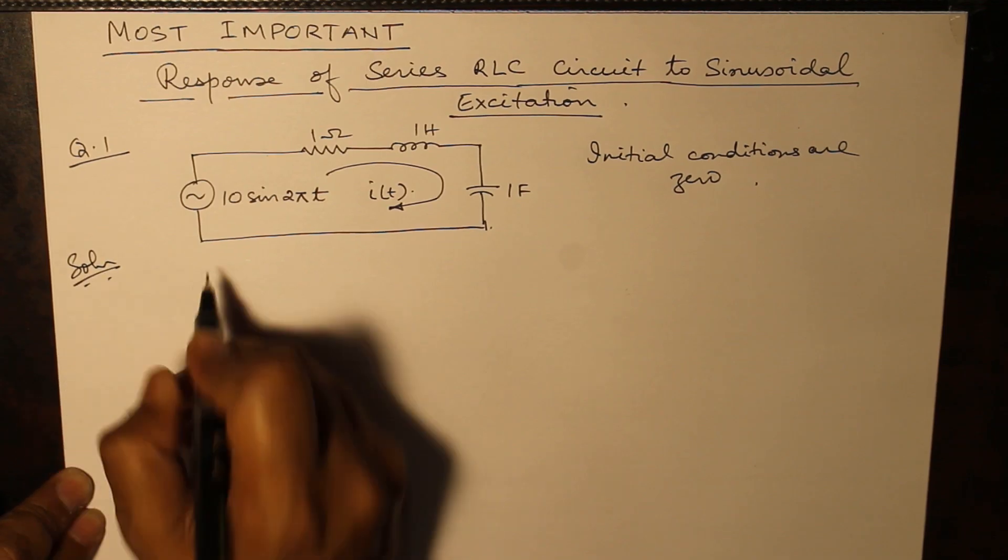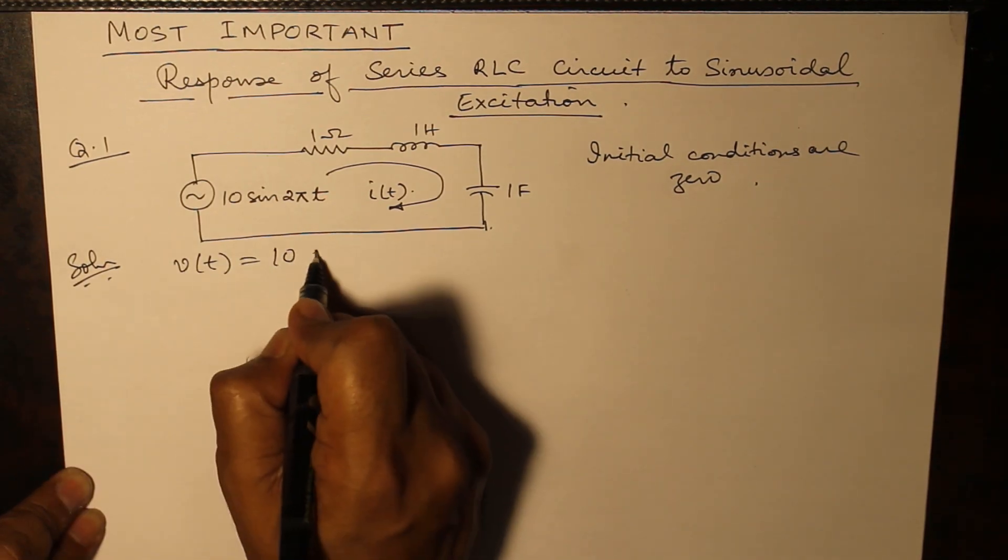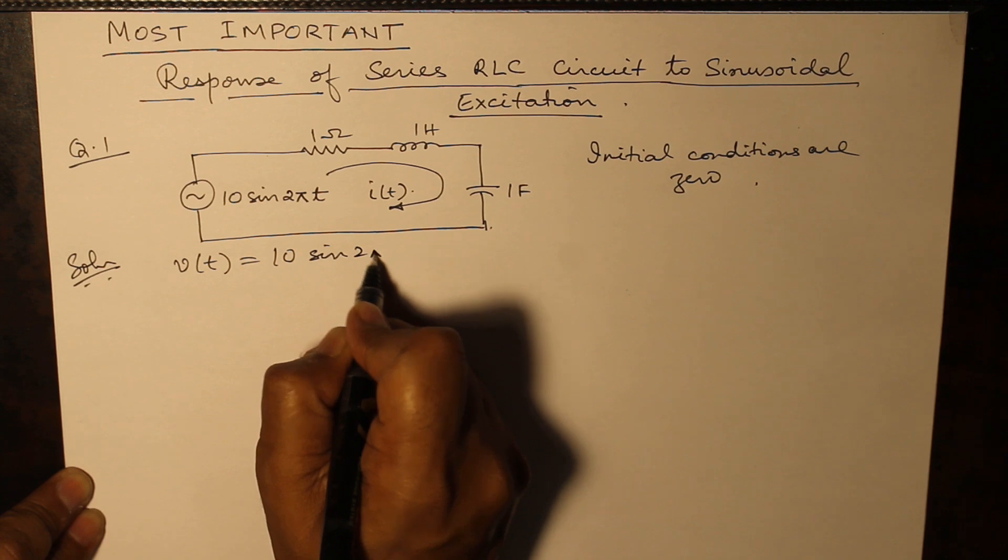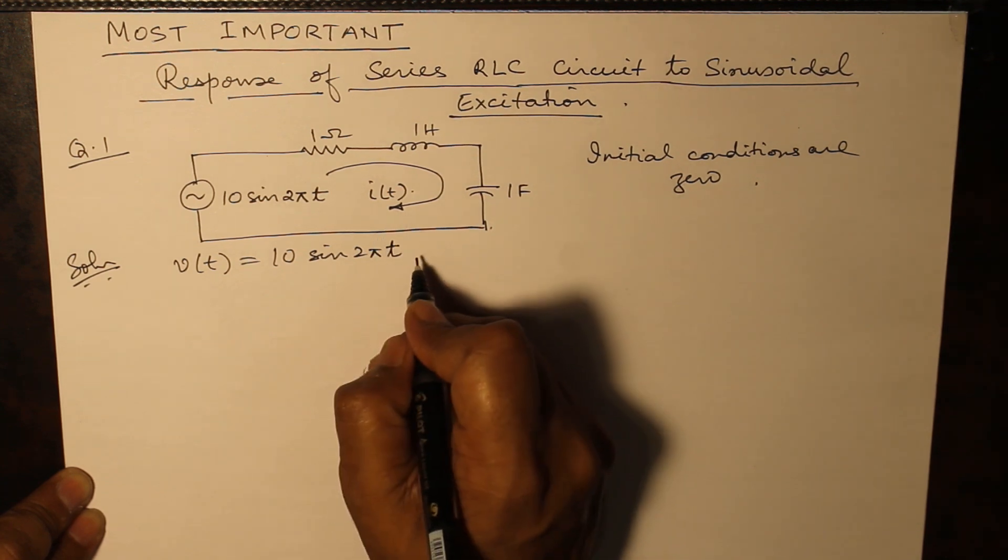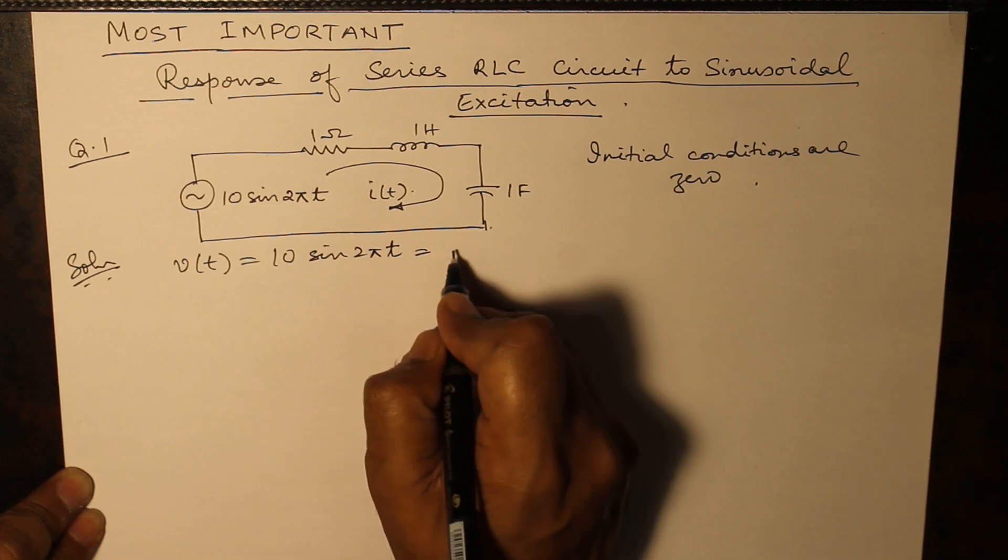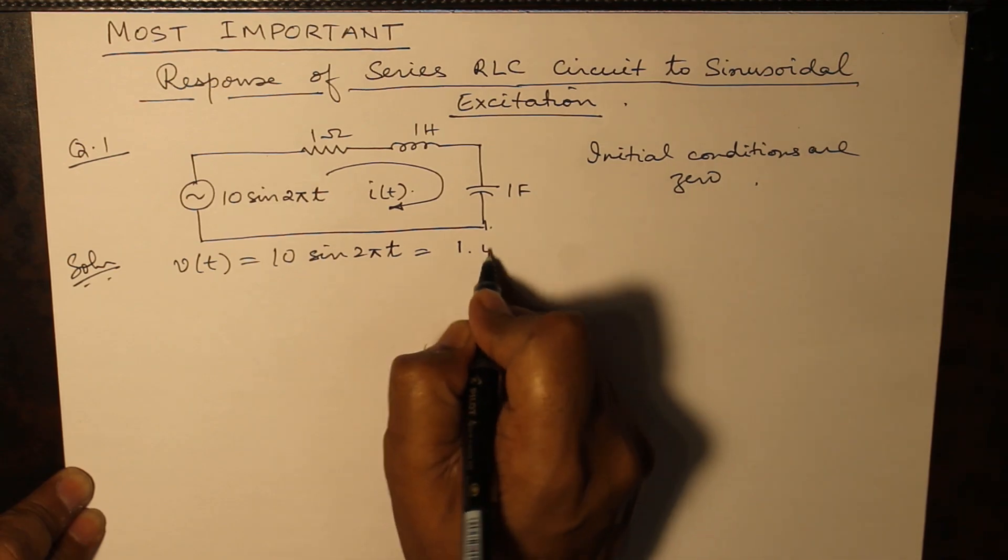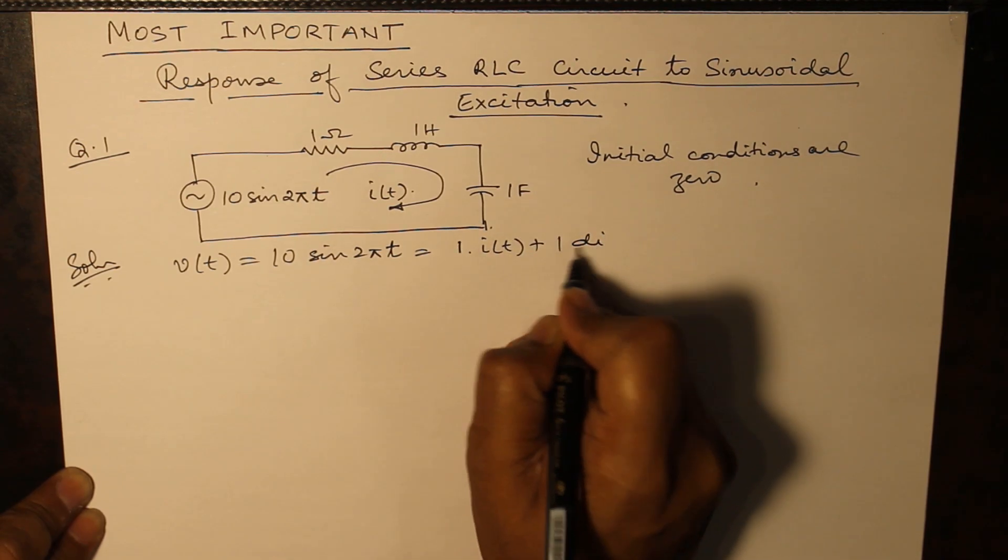Writing the KVL equation: V(t), which is equal to 10 sin 2πt, is equal to 1·i(t) plus...